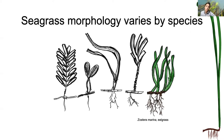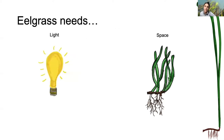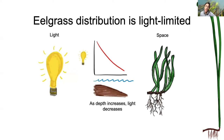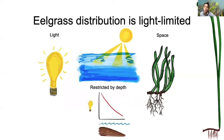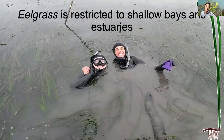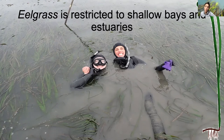Seagrasses as a group have pretty low taxonomic diversity, meaning there are not that many species — only about 60 species, which is pretty low. But let's get back to eelgrass. Eelgrass needs light and it needs space. Light availability decreases as we increase in depth, which means eelgrass is restricted by depth and is usually only found in shallow bays and estuaries.